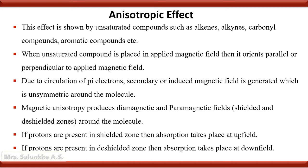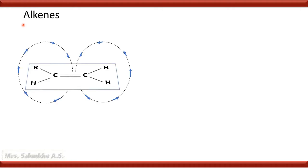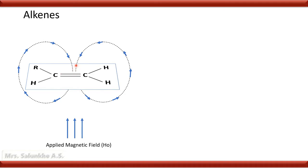Now we are going to learn anisotropic effects in different types of compounds. First, the anisotropic effect in case of alkenes. Alkenes contain a carbon-carbon double bond. When protons are present on an sp2 hybridized carbon and the alkene molecule is placed in an applied magnetic field, its planar structure orients perpendicular to the applied magnetic field. Due to the circulation of pi electrons, a secondary magnetic field is produced, and the arrows indicating this field are anti-parallel to the applied magnetic field — this is the diamagnetic region.